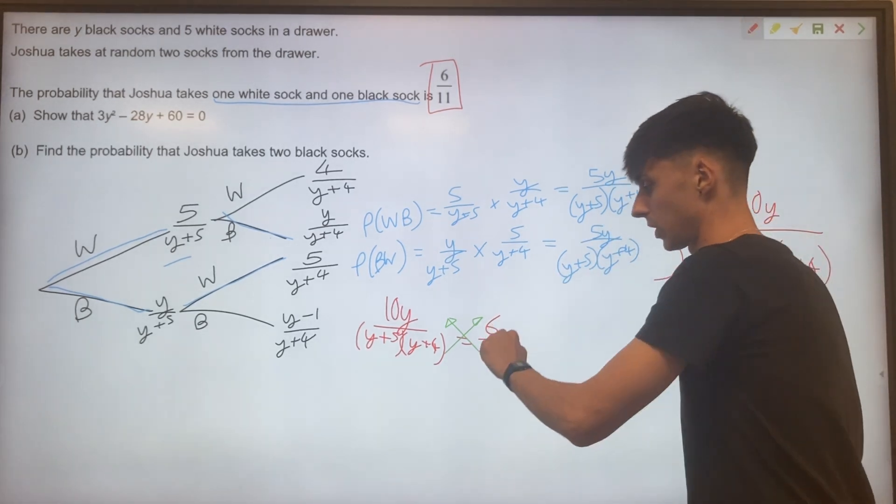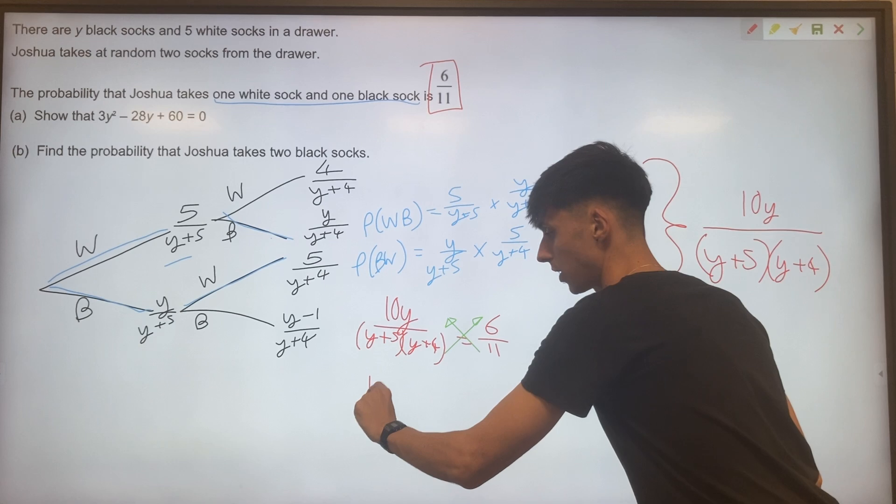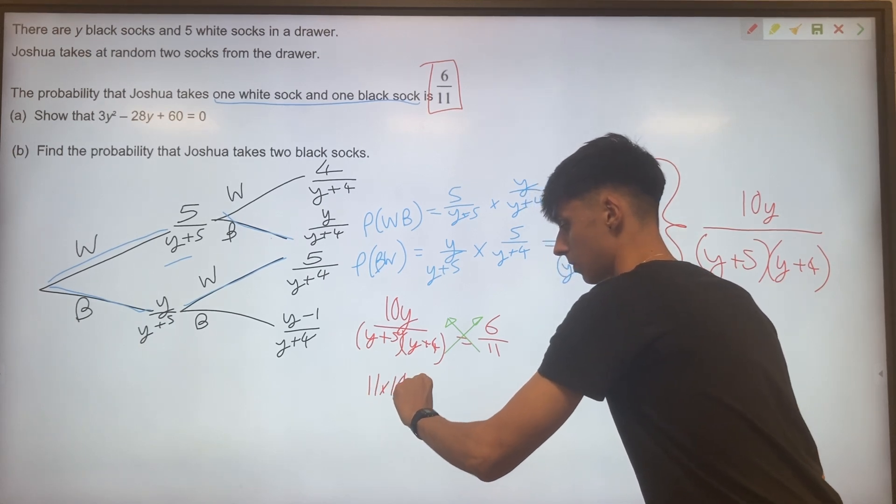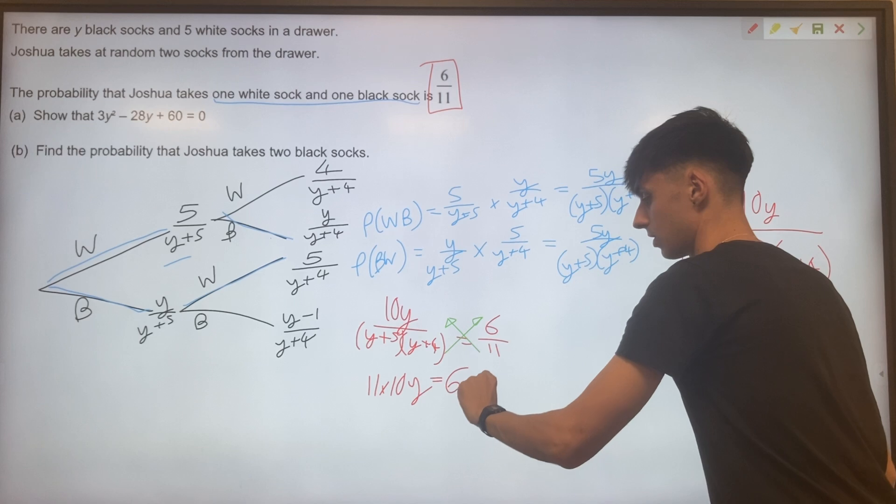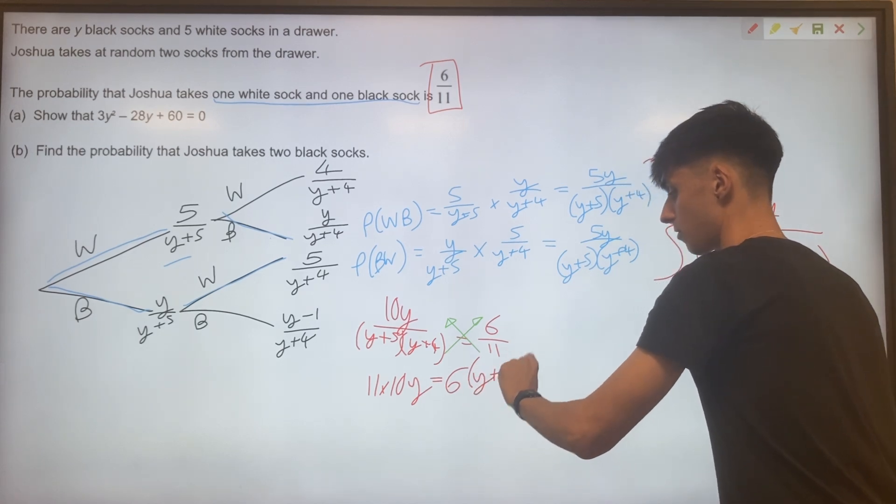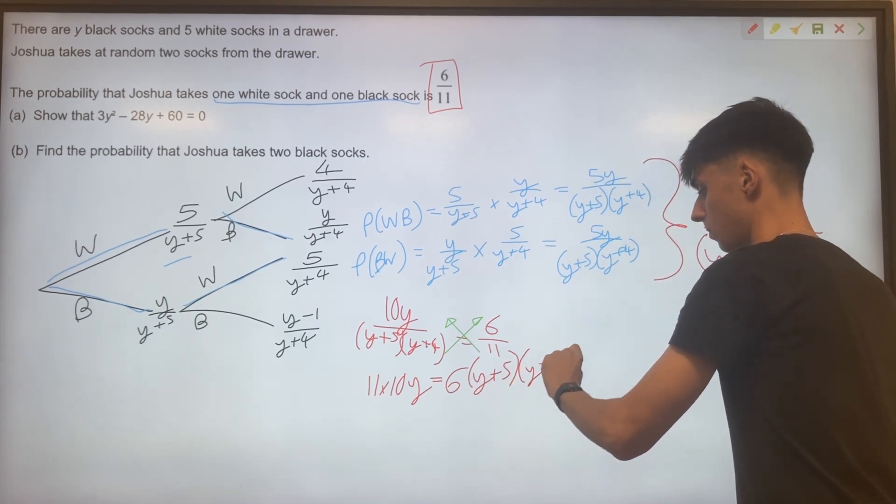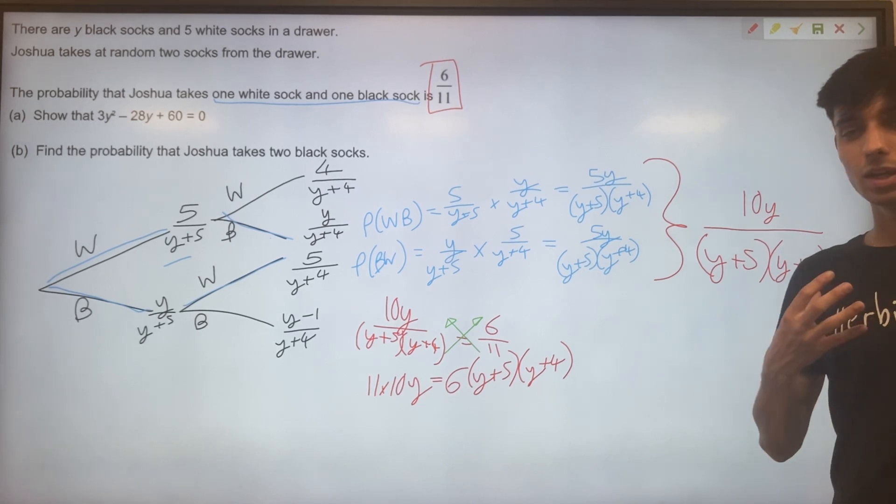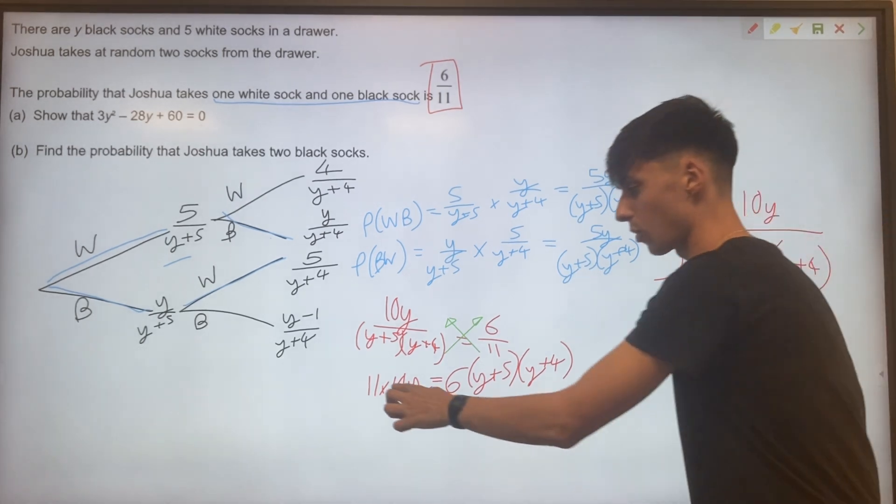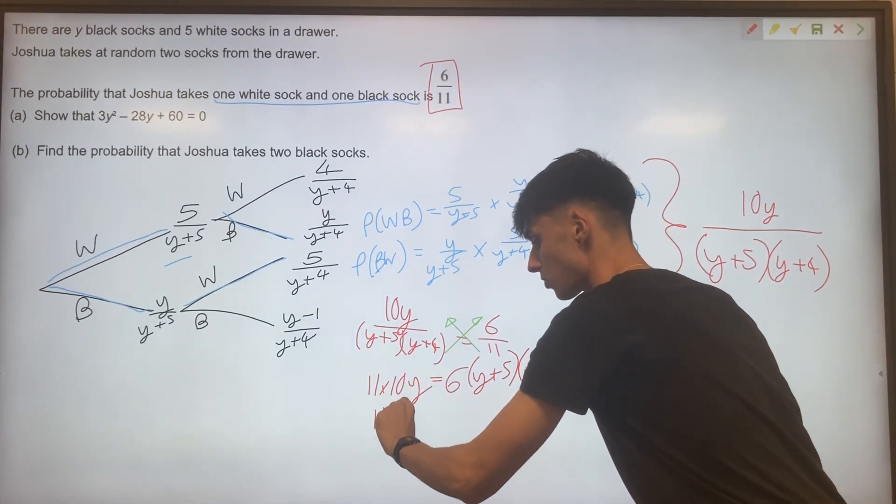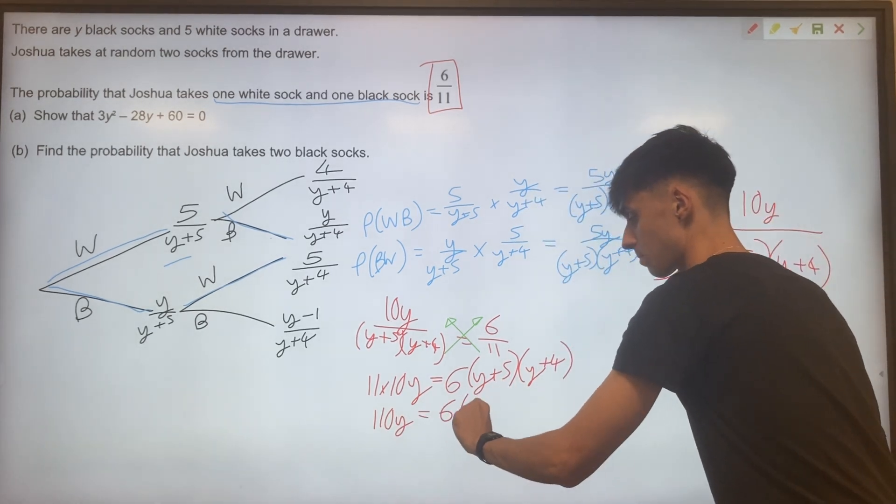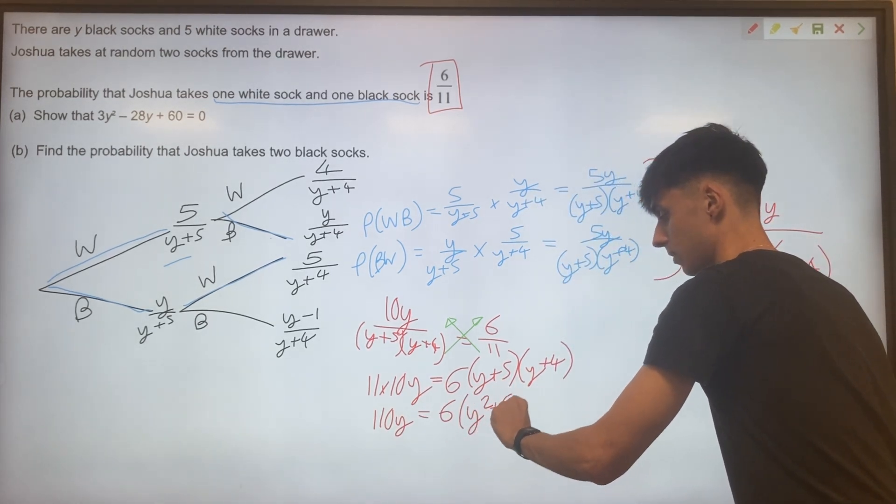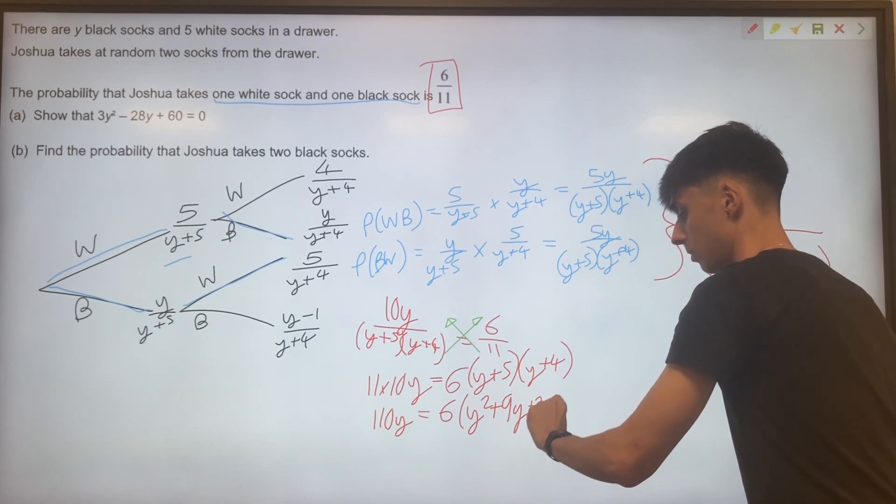So let's try that one out. We're going to have 11 times 10y. And on this side, we're going to have 6 times y plus five brackets, y plus four. Expanding things out, so we've got 11 times 10y for 110y. And then here we're going to have 6 brackets, y squared plus 9y plus 20.